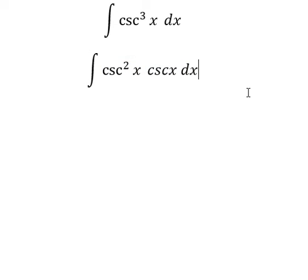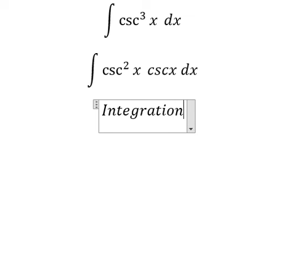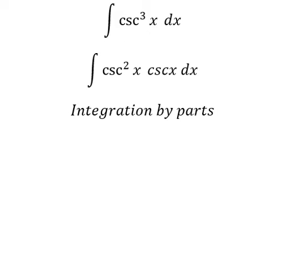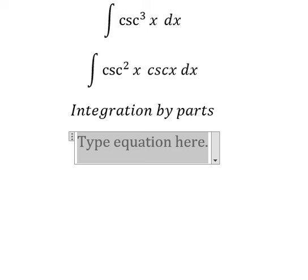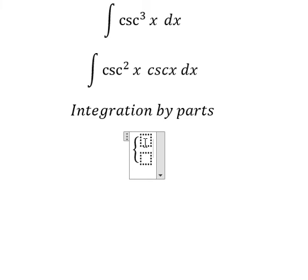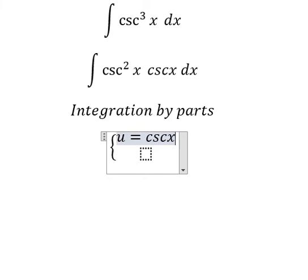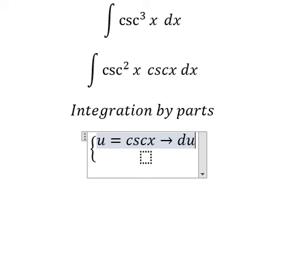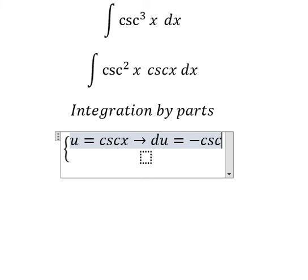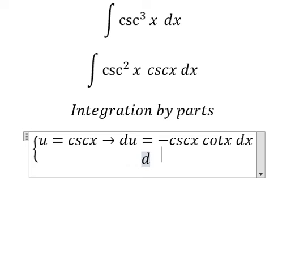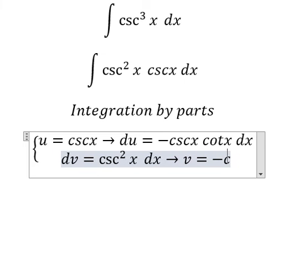Next we need to use integration by parts. We have u equals cosecant x, so we do the first derivative for both sides. We have du equals negative cosecant x cotangent x dx. dv we have cosecant squared x dx, so if we do this integration we have v equals negative cotangent x.